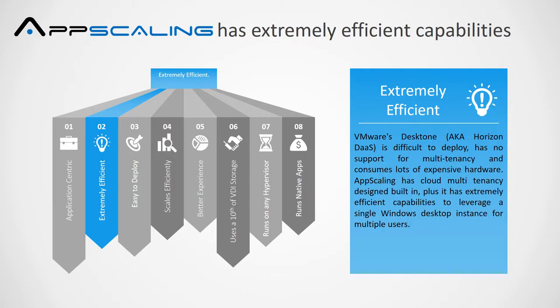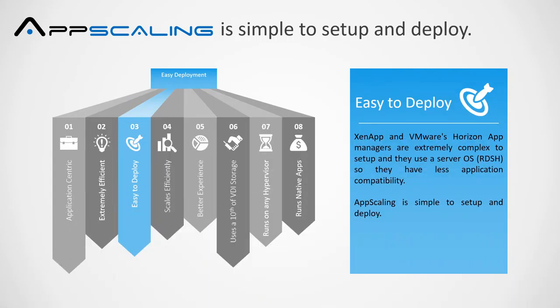App Scaling has cloud multi-tenancy design built-in, plus extremely efficient capabilities to leverage a single Windows desktop instance for multiple users. App Scaling is simple to set up and deploy. ZenApp and VMware Horizon App Managers are extremely complex to set up, and they use a server OS, so they have less application compatibility.